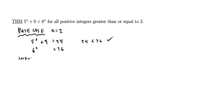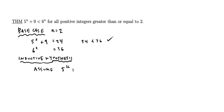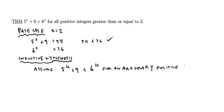The inductive hypothesis will be essentially the same as in every other inductive proof. I'm going to assume 5 to the k plus 9 is less than 6 to the k for an arbitrary positive integer k. Again, k does have to be greater than or equal to 2.